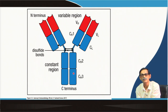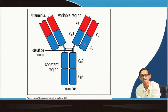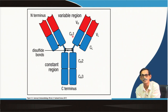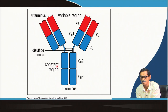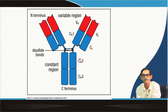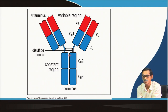The blue region is known as the constant region. In the heavy chain there are three constant domains designated CH1, CH2, and CH3, while the light chain constant region is designated CL. So the complete set of domains is: VL, CL, VH, CH1, CH2, CH3. Two such units are joined together, and two such units are further joined by disulfide bonds.